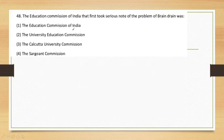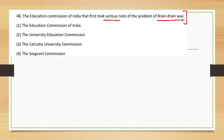Question number 48: The Education Commission of India that first took serious note of the problem of brain drain. Brain drain means that educated and talented people leave one country to go study or work in another — this is the problem of brain drain. The Education Commission of India that took this problem seriously was the Kothari Education Commission.